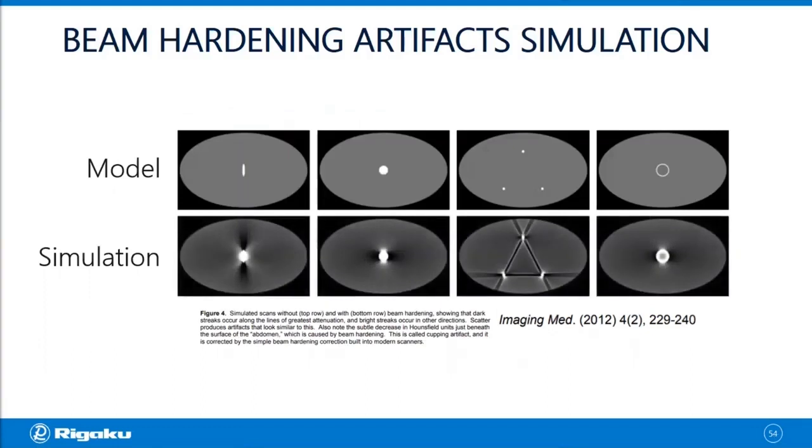You can see that the model and the simulation look different and that's because the simulation has artifacts like those streaks coming from the high density areas. It gets worse when you have multiple high density areas and you see shading like this one sometimes as well. So this is how beam hardening artifacts usually look.